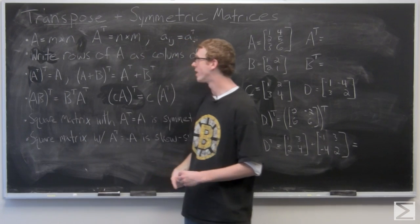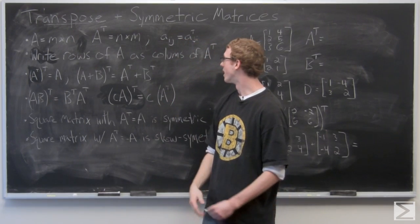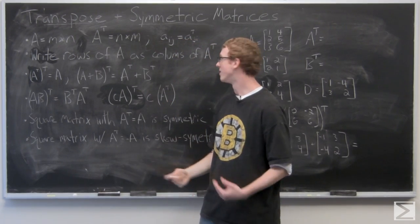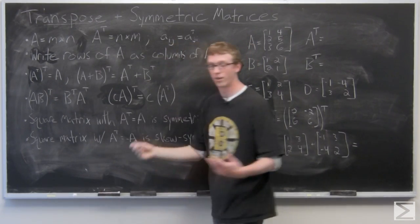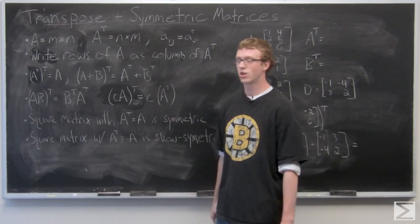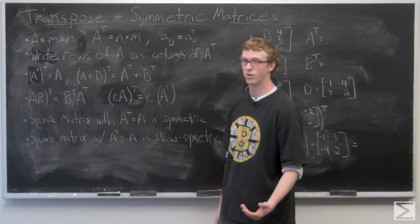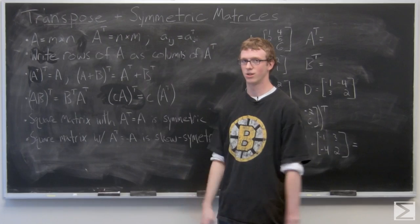So essentially all we're doing here is writing the rows of A as columns of A T. Had a little misspelling there. Or you could rather write the columns of A as rows of A T. It's essentially doing the same thing.